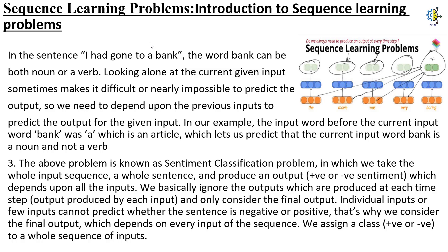The above problem is known as a sentiment classification problem, in which we take the whole input sequence — a whole sentence — and produce an output of positive or negative sentiment, which depends upon all the inputs. We basically ignore the outputs produced at each time step and only consider the final output. Individual inputs or few inputs cannot predict whether the sentence is negative or positive. That's why we consider the final output, which depends on every input of the sequence, and we assign a class — positive or negative — to the whole sequence of inputs.